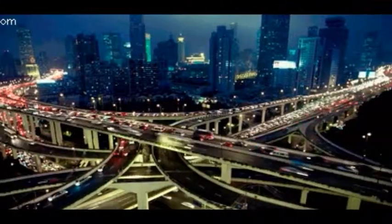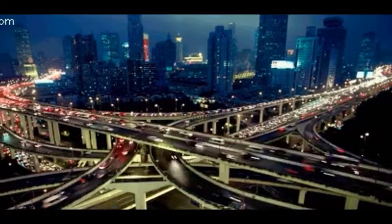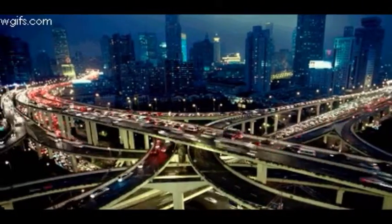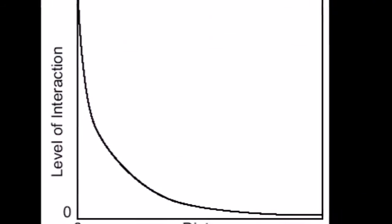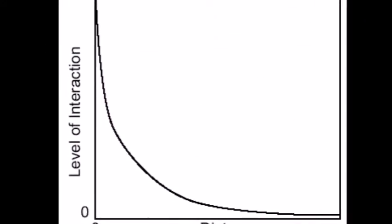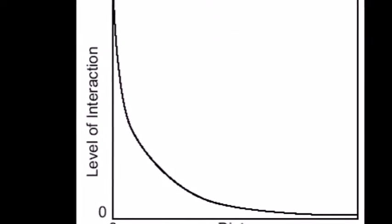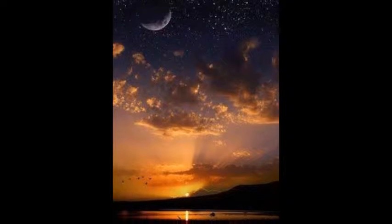Distance decay is a concept that the further apart two points are from each other, the less influence they have on each other, and the less they interact. This is normally pictured in a graph like this one.